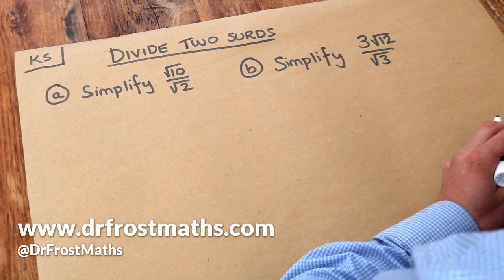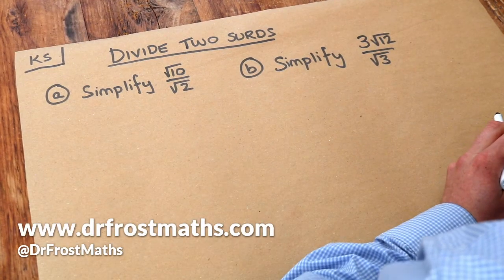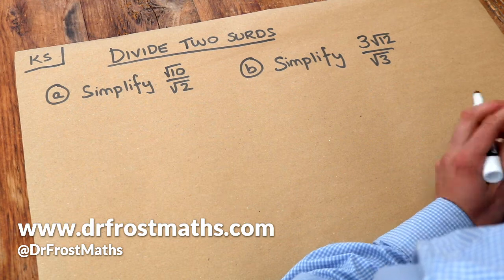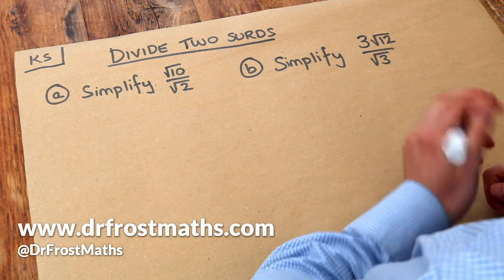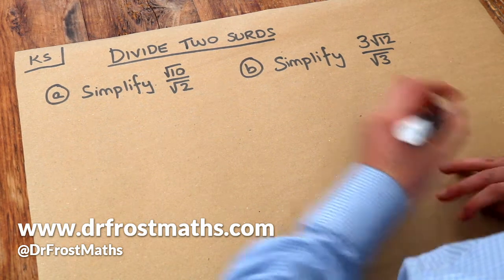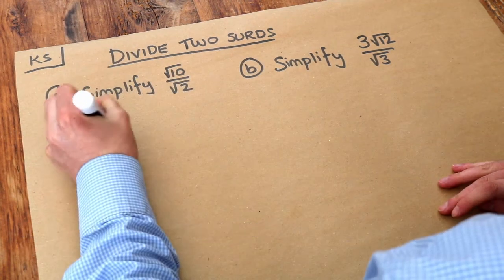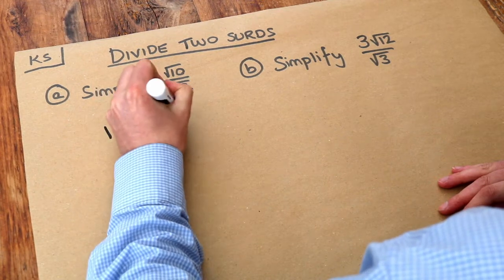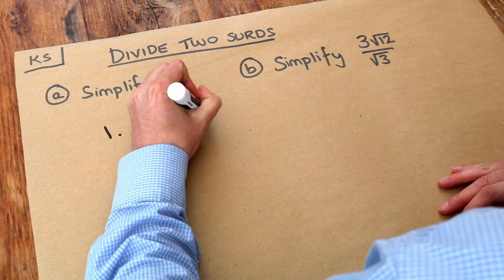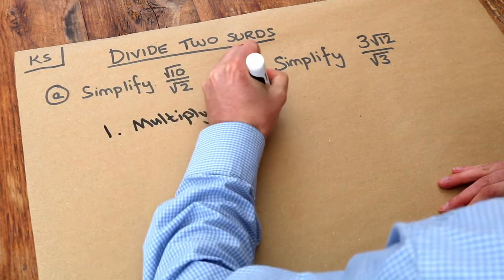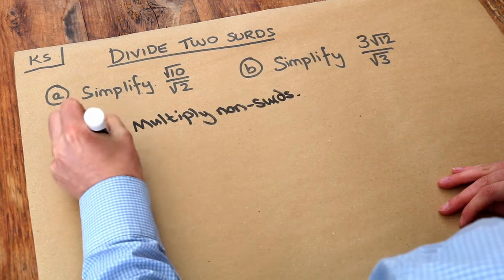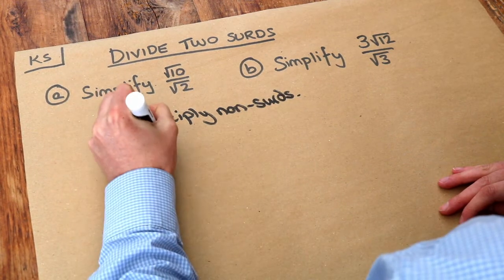Hello and welcome to this Dr. Rosemath's key skill video on dividing two surds. In a previous video on multiplying two surds, we saw that the process was as follows: we first multiply the non-surds together, and then secondly we multiply the surds.